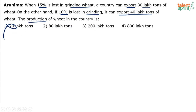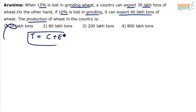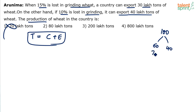You have to understand something very basic here, otherwise you will not be able to proceed with the solution. Let us assume the total production is T. The total production is equal to the consumption plus export. Out of the total production in your country, you will consume something and the remaining is exported. If you have produced 100 and your requirement is 60, you will use 60 and 40 will be exported. Always, total is split into two parts: what you consume in-house and whatever is left out is exported.